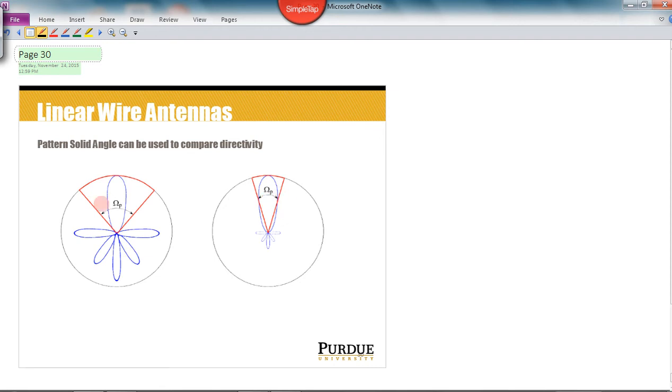If the pattern solid angle, if we know omega sub p for an antenna, we can use that to calculate average power, we can use it to calculate directivity, and we can use it to calculate total radiated power. So if we know the pattern solid angle, it makes some of the math that we've done previously a little more simple. So we'll say that, say we want to know what the average power, the normalized average power in the antenna is. Well, that is given as the surface integral of the normalized power density function theta and phi d omega divided by the integral of the surface integral d omega.